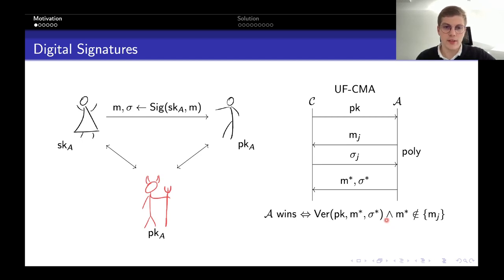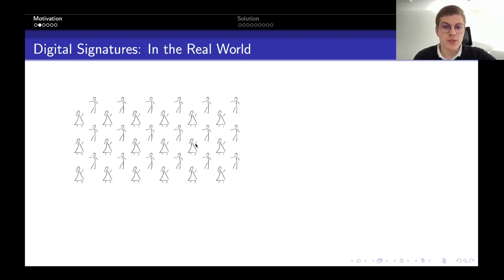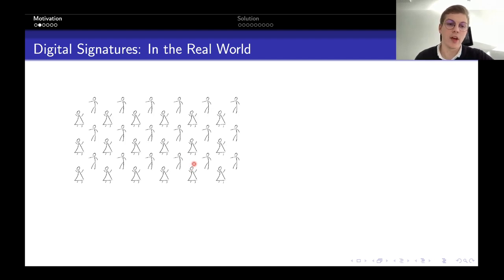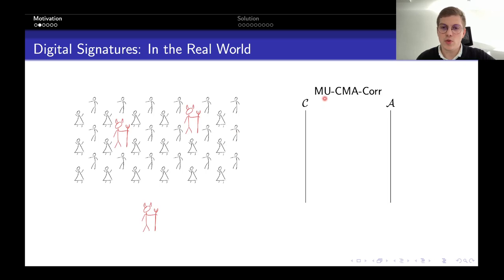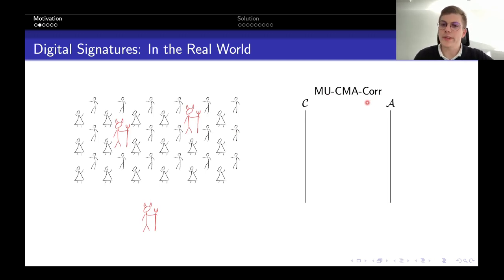This is the standard notion, but it is not quite what happens in the real world. In the real world, we don't have two users — we have many users and many systems that all have their own key pairs, can communicate with each other, and make use of the same system parameters. We can have outsider adversaries that observe the situation, but we can also have insider adversaries that corrupt users and learn their secret key material. This leads to the notion of multi-user security under chosen message attacks with adaptive corruptions — which I will simply call multi-user security.